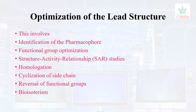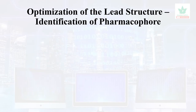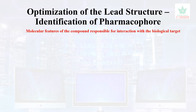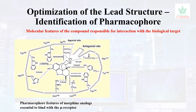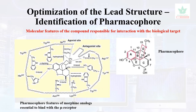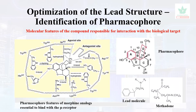Pharmacophore identification involves recognizing the molecular features of a compound responsible for interaction with a biological target. The pharmacophore features of morphine analogues essential to bind with the mu receptor are taken as a template, and leads are designed and optimized to exhibit similar interactions with the receptor. The pharmacophore of narcotics was used as a lead molecule template, from which several compounds were synthesized, including methadone, used for maintenance therapy of morphine addiction.